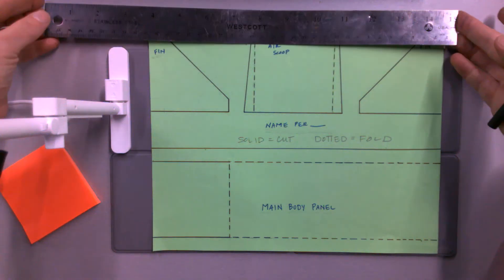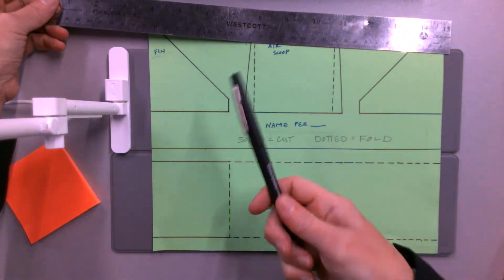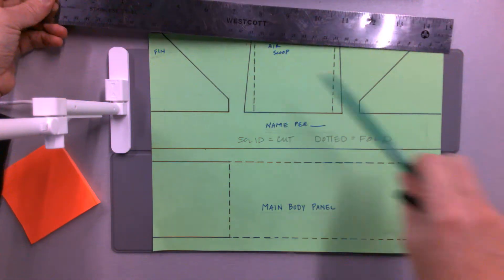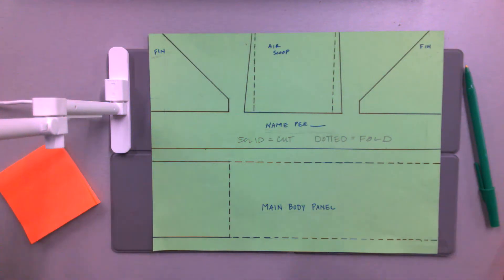For your skimmer project, you need a ruler, a ballpoint pen, and a pair of scissors. That's all you need for this portion of the project.